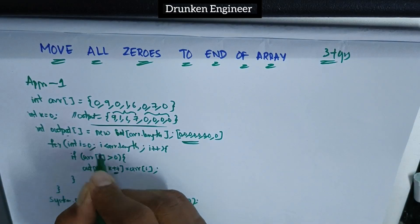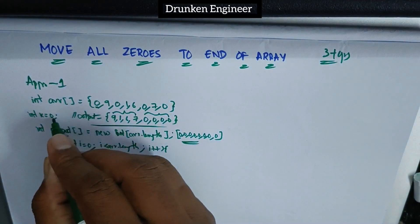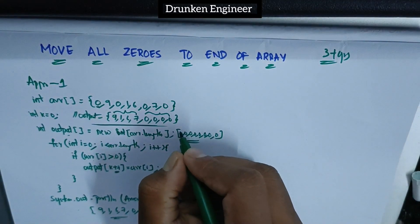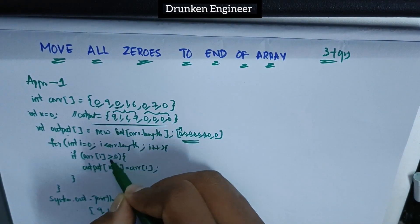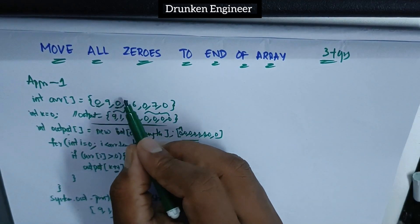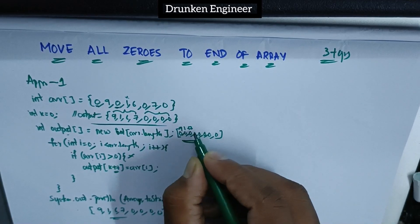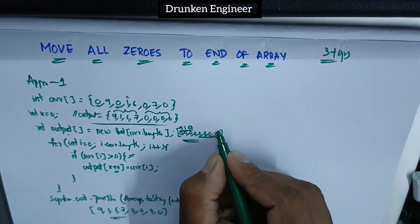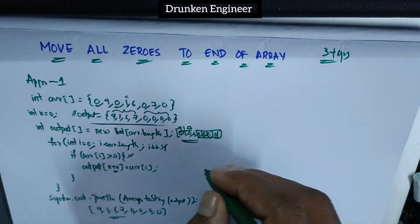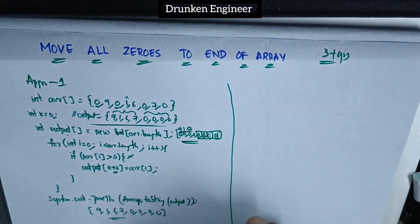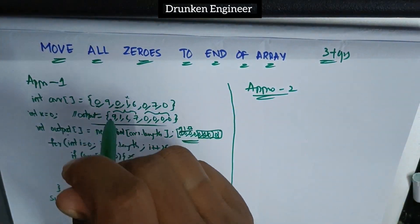When the first element is zero, it's not greater than zero so it skips. When nine comes, k count is zero, so it replaces zero with nine. It skips zeros and when one comes, it gets inserted at position one. Similarly, six and seven get inserted, and the remaining zeros stay at the end. This is one approach.